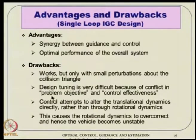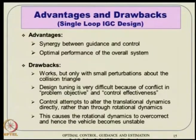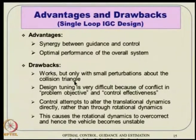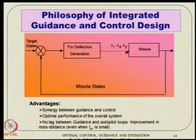The problem objective is to translate the CG from point A to point B (the target position), while control effectiveness happens in the rotational dynamics. When you deflect a control surface, it is not the force generation that is important — what is important is the moment generation. Because of this delta force, there is a moment arm and hence large moment, causing the body to rotate — which is typically ignored at the point mass level.